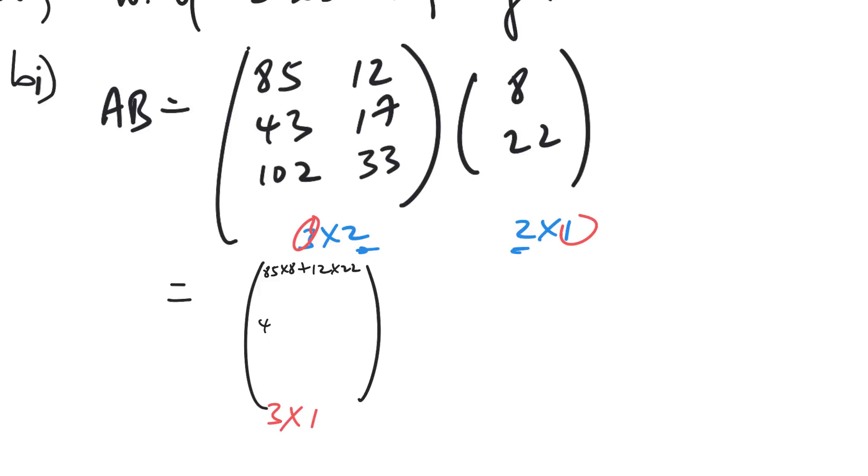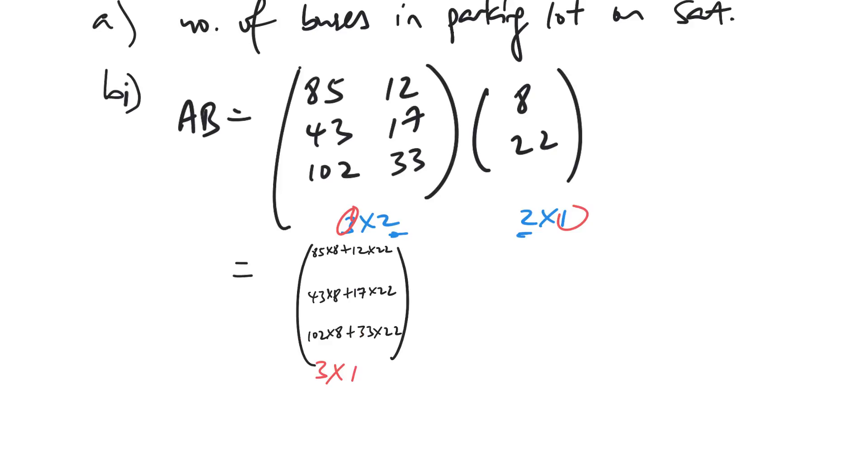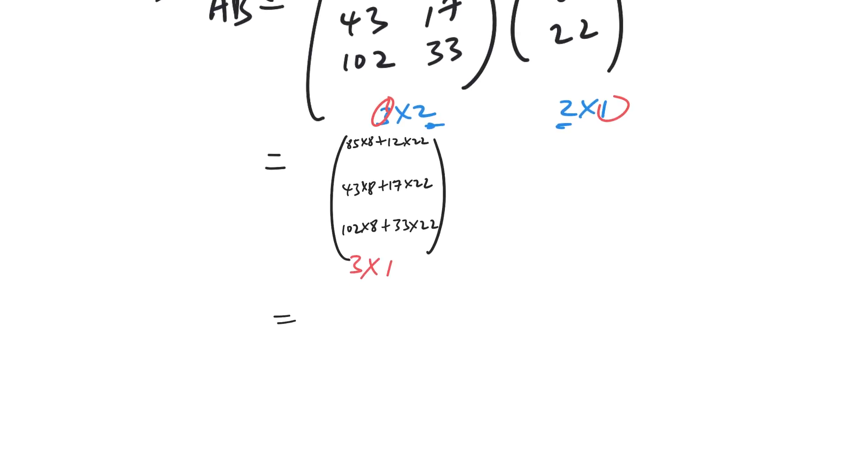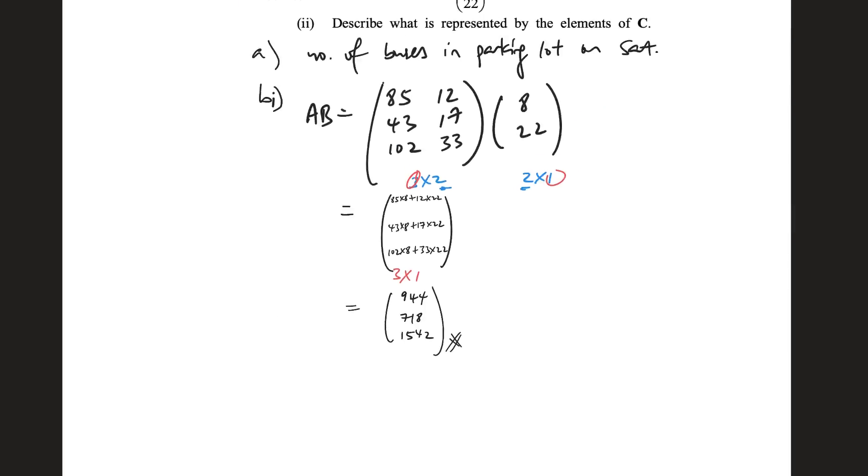This will be 43, the second row, times 8 plus 17 times 22. And this will be 102 times 8 plus 33 times 22. Third row, one column. Key it into the calculator and then what you get is simply 944, 718, 1542. Done.